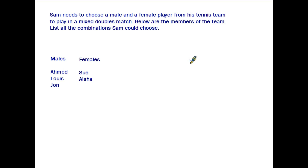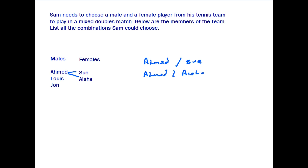Questions like these do not necessarily need a table — this tutorial is more to understand how a possibility space can be presented. Going back to our tennis example, if you simply wanted to work out the pairings by writing them as a list — Ahmed and Sue, Ahmed and Aisha, Louis and Sue, Louis and Aisha, John and Sue, John and Aisha — you would get full marks in an exam. A table is simply one option to help you answer this type of question, or for situations where you are actually asked to draw a possibility space table.